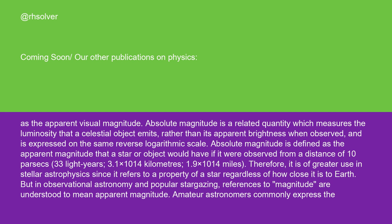Absolute magnitude is a related quantity which measures the luminosity that a celestial object emits rather than its apparent brightness when observed and is expressed on the same reverse logarithmic scale. Absolute magnitude is defined as the apparent magnitude that a star or object would have if it were observed from a distance of 10 parsecs (33 light-years, 3.1×10^14 kilometers, 1.9×10^14 miles). Therefore, it is of greater use in stellar astrophysics since it refers to a property of a star regardless of how close it is to Earth. But in observational astronomy and popular stargazing, references to magnitude are understood to mean apparent magnitude.